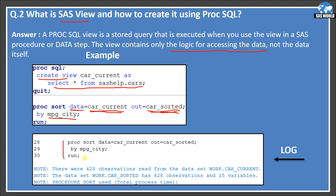Looking at the log when I run this PROC SORT, there is nothing mentioned about SELECT * or the underlying query — it runs automatically in the background. The note reads like a normal dataset: '421 observations read from the data set work.car_current.' It refers to it as a dataset, not a view. Then car_sorted has 428 observations and 15 variables. Everything appears normal in the log.